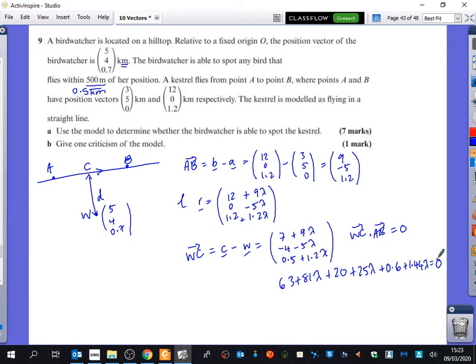So we end up with, what's that, 106, 107.44 lambda is equal to, that's 83.6 minus 83.6. Is that all the numbers that you've got so far?